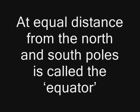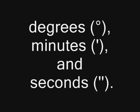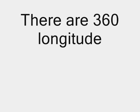The equator is at equal distance from the north and south poles. It is the circle designated as 0 degrees latitude, measured in degrees, minutes, and seconds. There are 180 main latitudes and 360 longitudes.